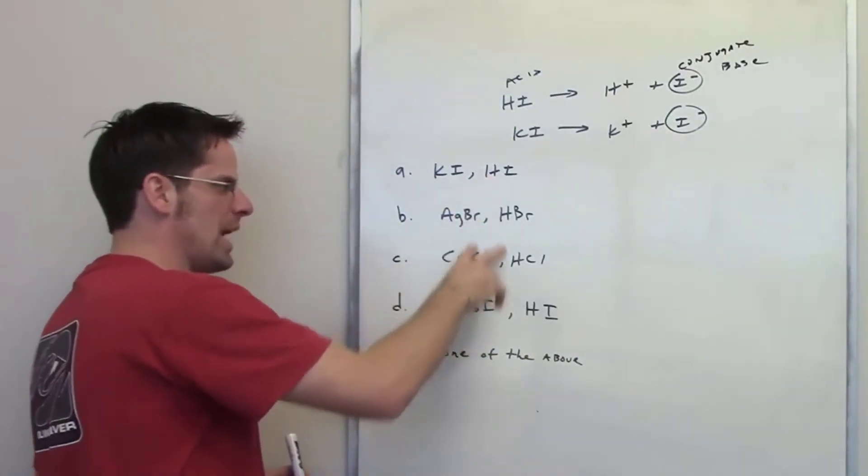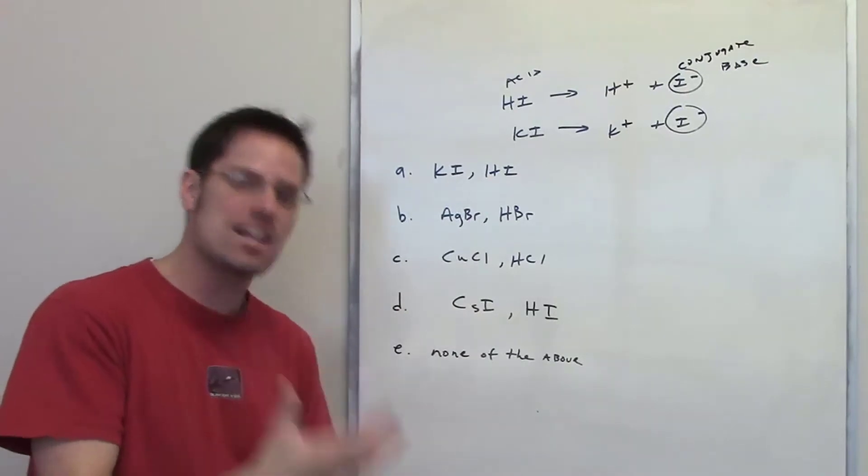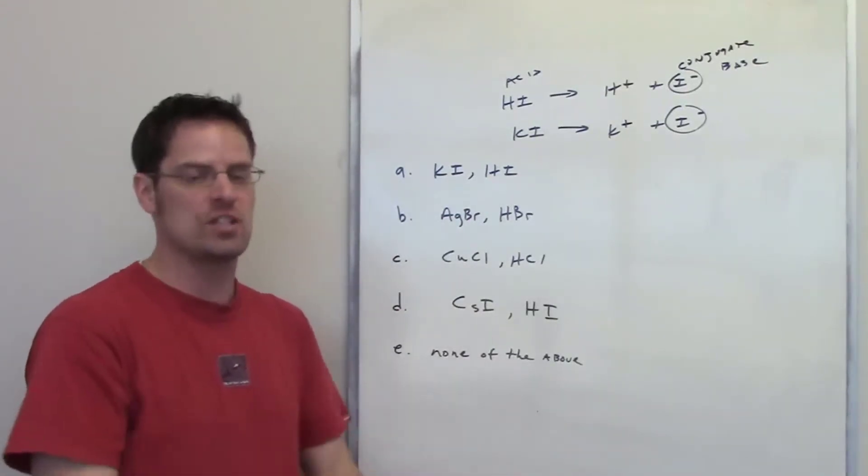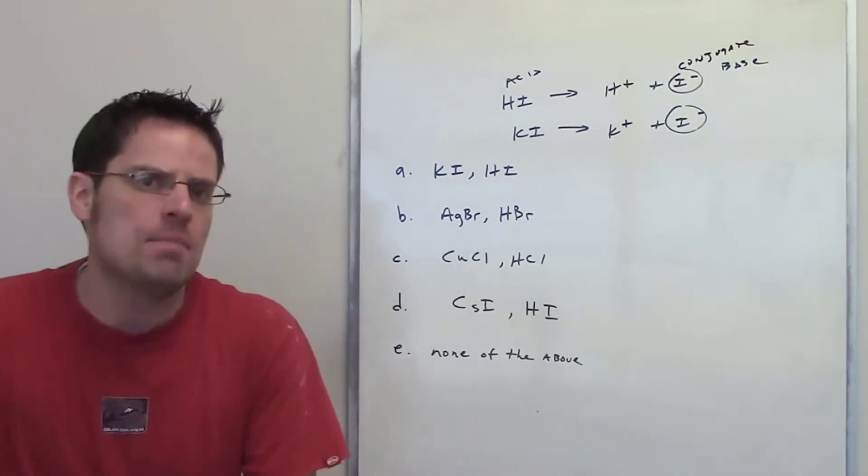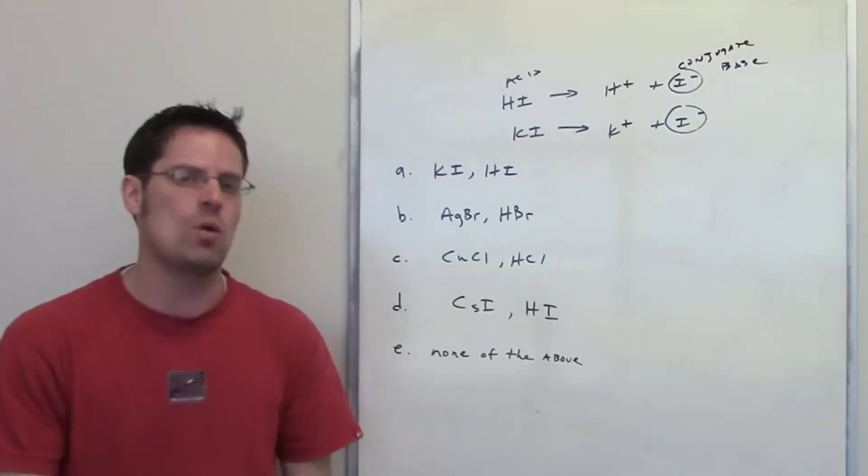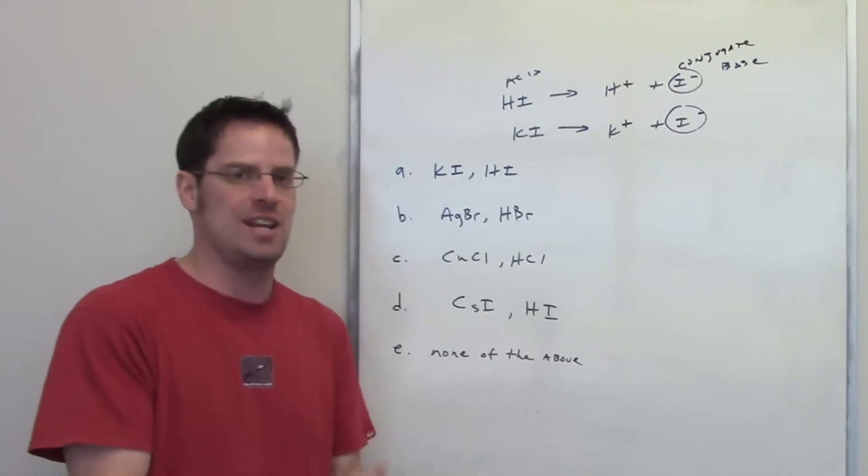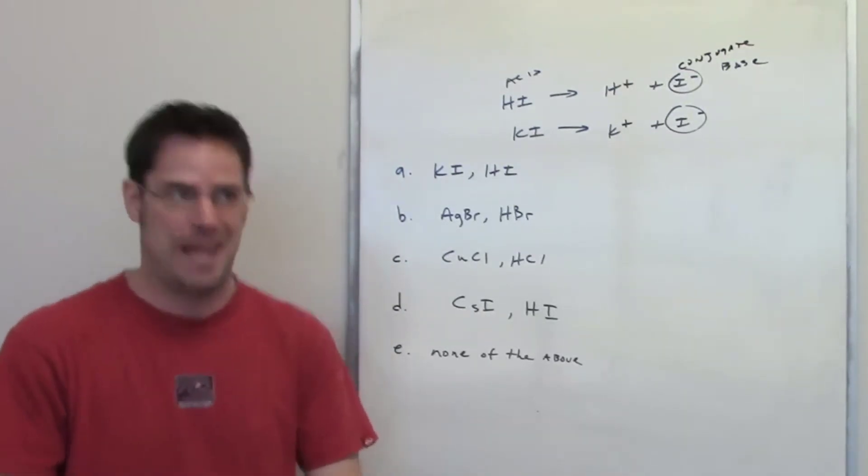As you scroll down here you'll see that every one of these pairs is an acid and a source of its conjugate base. That is true. But which of them is a buffer pair? Remember that in order to be a buffer you have to have a weak acid and a source of its conjugate base, not just any acid.